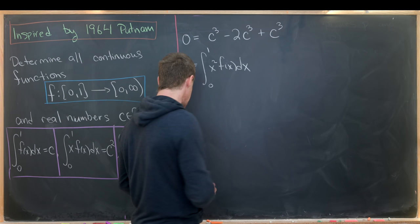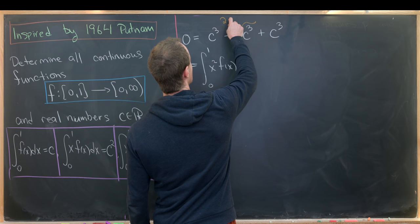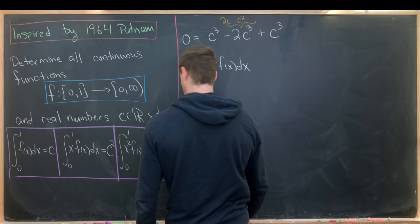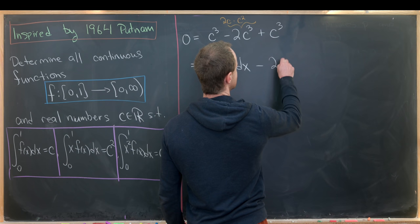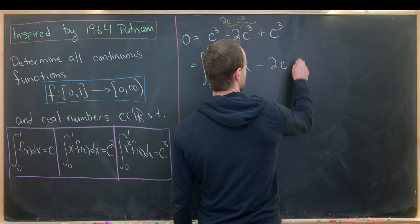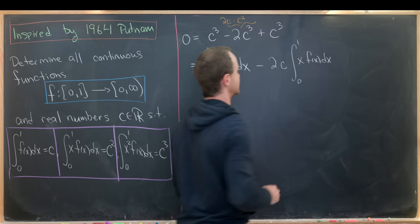Now, the second appearance of c³ can be decomposed maybe into 2 times c times c². Then we can use this second integral. So this is going to be minus 2 times c times the integral from 0 up to 1 of xf(x)dx.